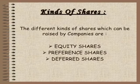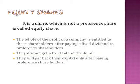The different kinds of shares which can be raised by the companies are equity shares, preference shares, and deferred shares. Equity share means it is a share which is not a preference share. The whole of the profit of a company is entitled to these shareholders after paying a fixed dividend to preference shareholders. They do not get a fixed rate of dividend. They will get back their capital only after paying preference shareholders.